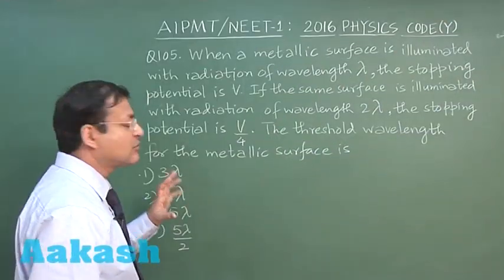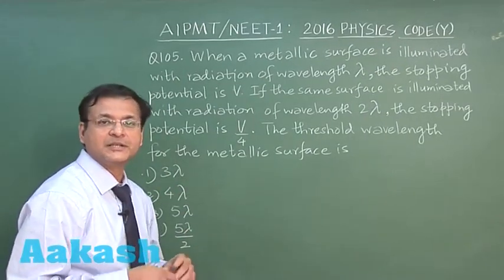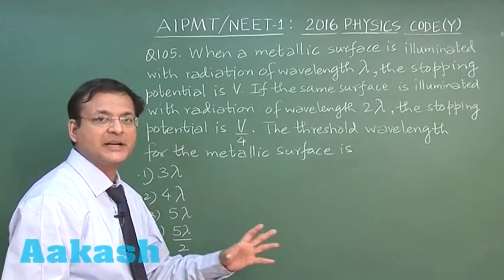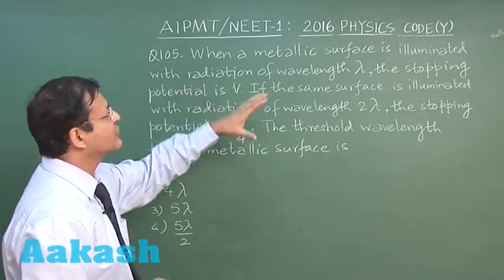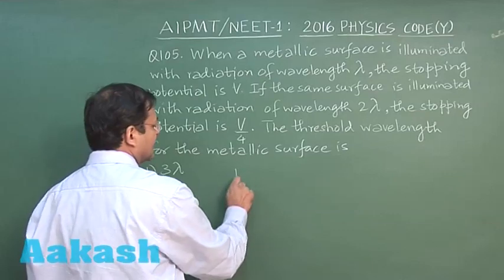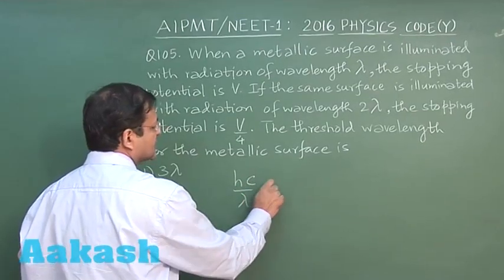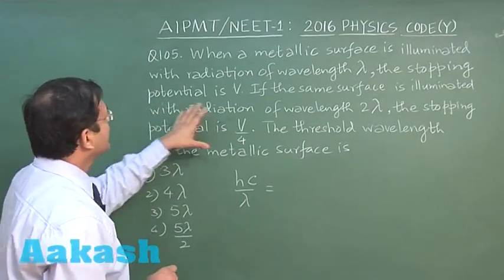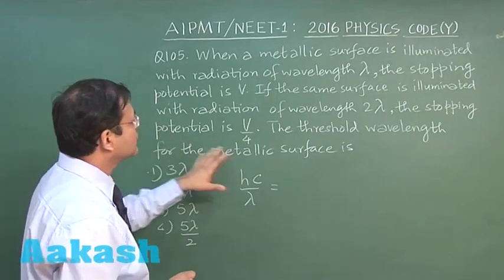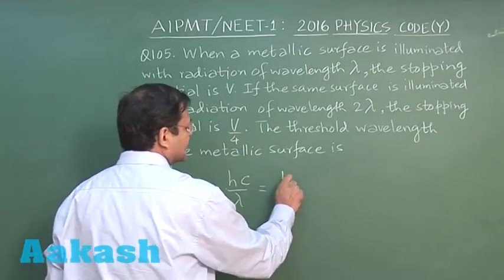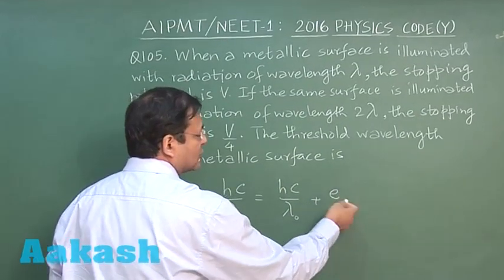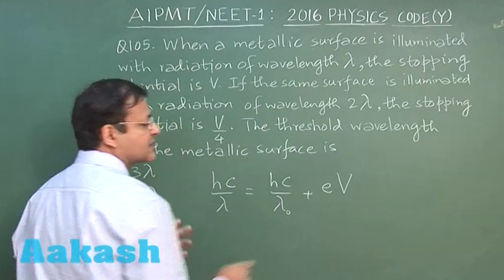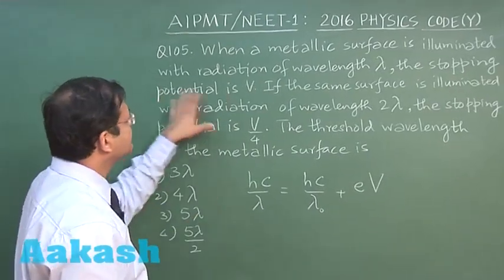Now this question 105 is based on photoelectric effect. The photoelectric equation directly you have to use. It says that when a metallic surface is illuminated with radiation of wavelength lambda, so you can have the equation hc by lambda, this is equal to the stopping potential is given to you, and they are asking to calculate the threshold wavelength. So I am writing it as hc by lambda naught plus electronic charge into stopping potential. In the first case, stopping potential is v, it has been given to you.